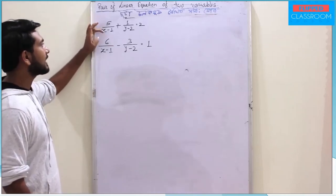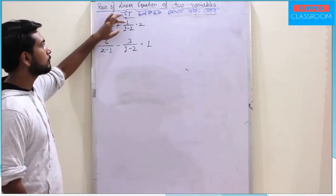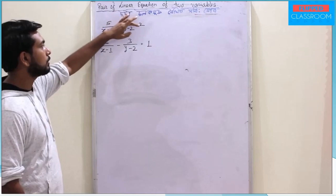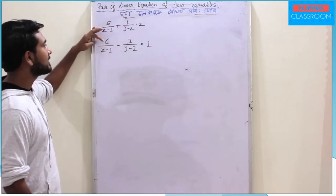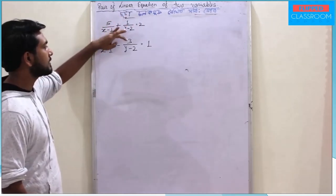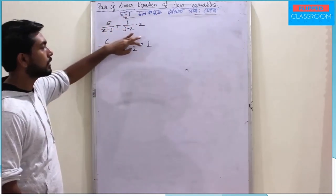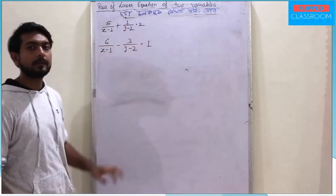Now the second problem: 5 by x minus 1 plus 1 by y minus 2 equals 2, and 6 by x minus 1 minus 3 by y minus 2 equals 1.